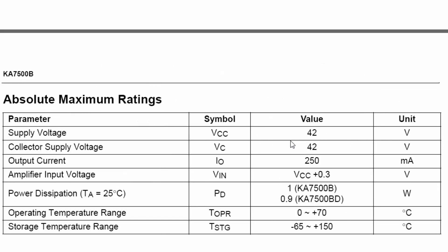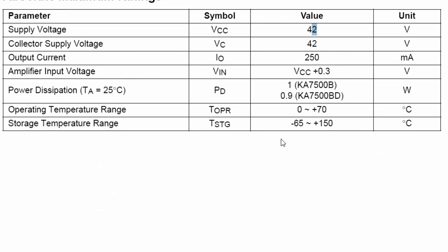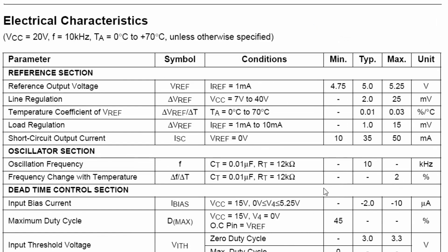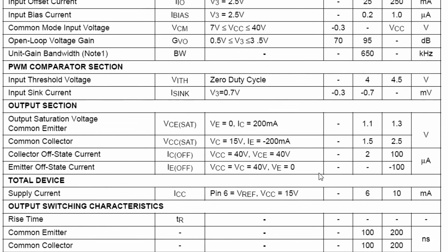The difference between the two ICs is minimal. The SDC7500 can operate up to a maximum of 42 volts, while the TL494 can work up to 40 volts — that is the only extreme limit difference. Both ICs can operate from 7 volts to 40 volts VCC, and the frequency and pinout footprint are the same.